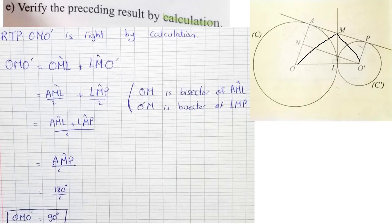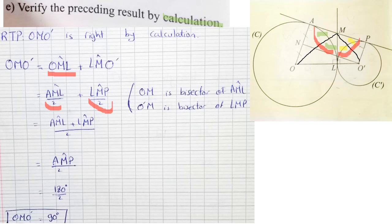Part E: verify the preceding results by calculation. We split angle OMO' into angle OML plus angle LMO'. Since M is exterior to each circle and OM and MO' are axes of symmetry, the angle below equals the angle above. So angle OML equals angle AML over 2, and angle LMO' equals angle LMP over 2. Together they give angle AMP over 2. Angle AMP is a straight angle (180 degrees), so angle OMO' equals 180 over 2 equals 90 degrees — confirmed.